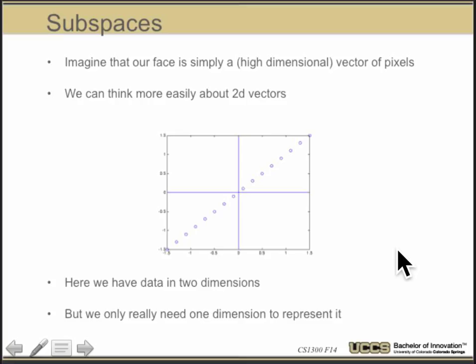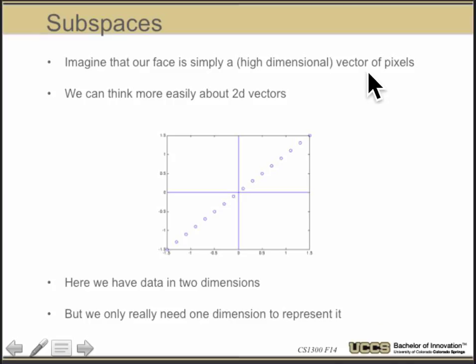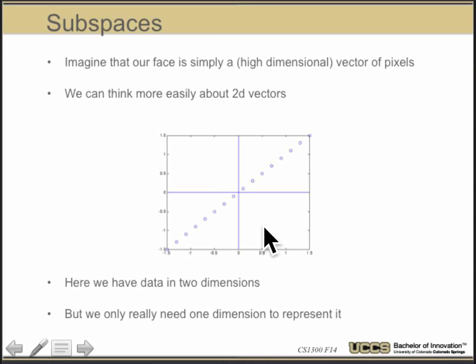Let's imagine the face is a highly dimensional vector of pixels. Even though we might be in thousands of dimensions, let's start by just thinking about 2D. Here we have some data in 2D, but what we really want to do is reduce dimensionality. If we have faces in 10,000 dimensions, we might want to reduce to 50. So let's think about how we can reduce two dimensions down to one dimension.